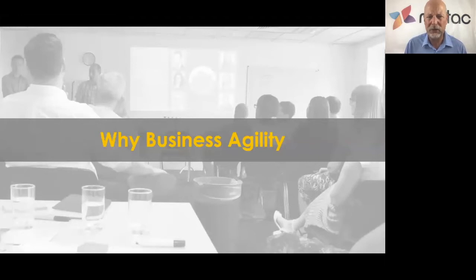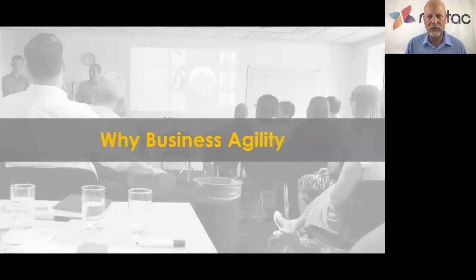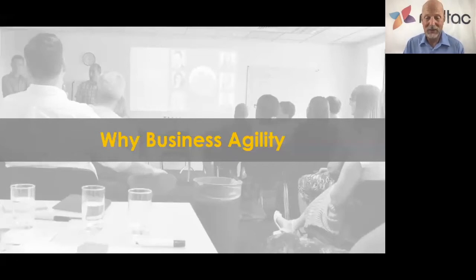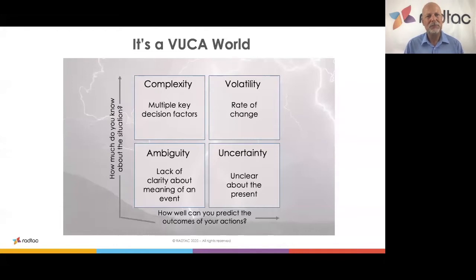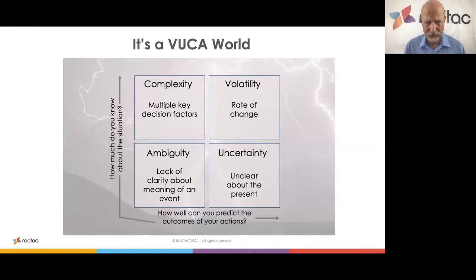Why business agility? I went into this more in webinars one and two. Why do businesses need to be agile nowadays, especially in the context of the Fourth Industrial Revolution? If you want a good overview, look at the World Economic Forum videos. The Fourth Industrial Revolution is moving into things like artificial intelligence, machine learning, and remote working. The bottom line is what's called a VUCA world — Volatile, Uncertain, Complex, and Ambiguous.